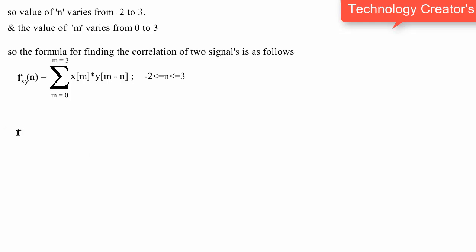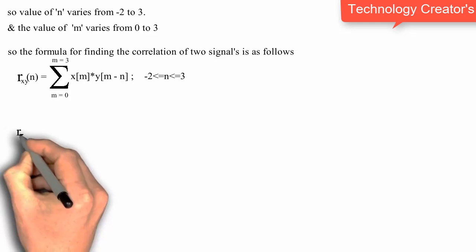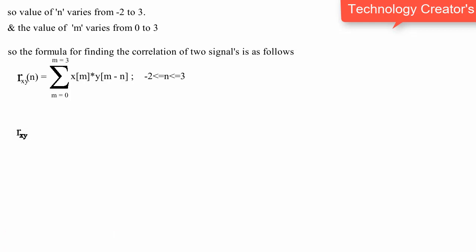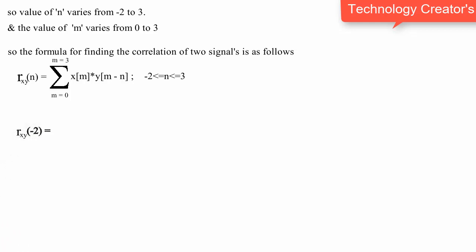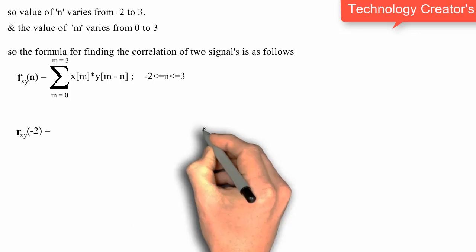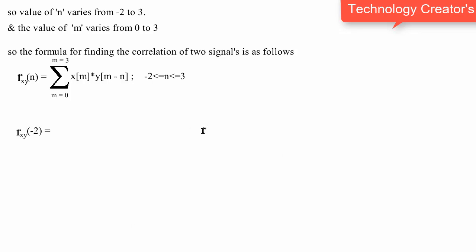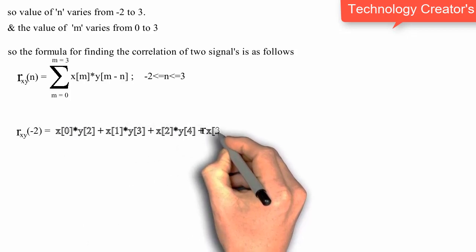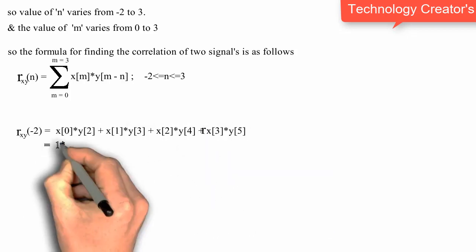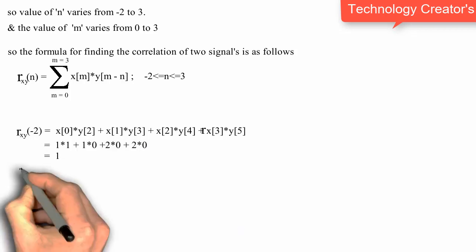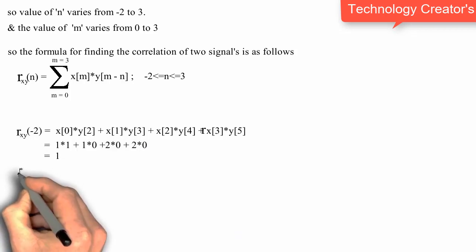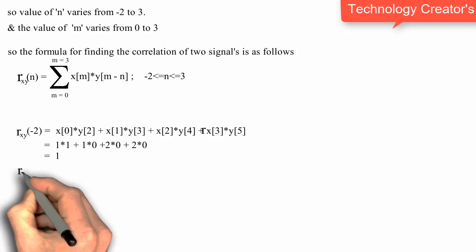So we start calculating R of minus 2, as N varies from minus 2 to 3 in the given sequence. First find out R of minus 2. For that we need to do the same thing we did in the linear convolution method. So the value of M varies from 0 to 3, and find the relation of R, X of Y with respect to minus 2 value of N. So R of minus 2 becomes equal to 1. Similarly for all.